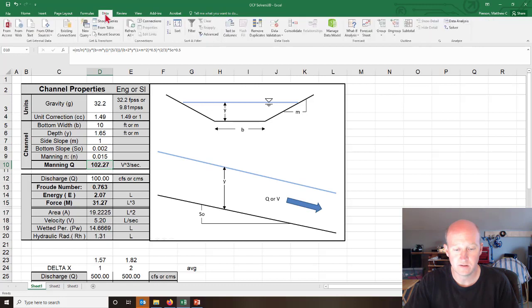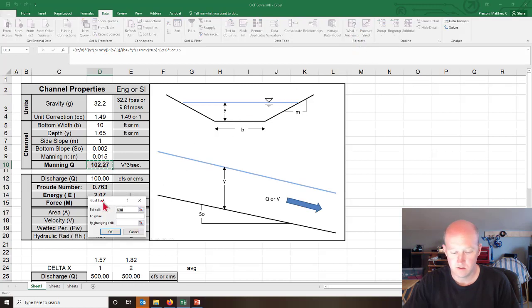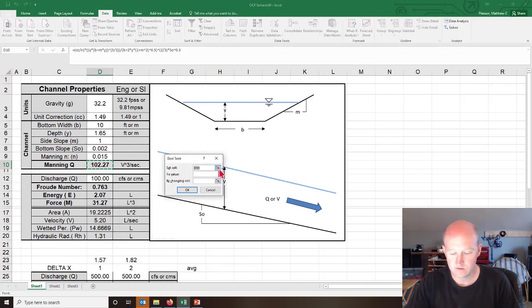If you go in here to Data and then What If Analysis, goal seek—we want to set this cell equal to 100, and we're going to do it by changing the depth. And so there's our answer.